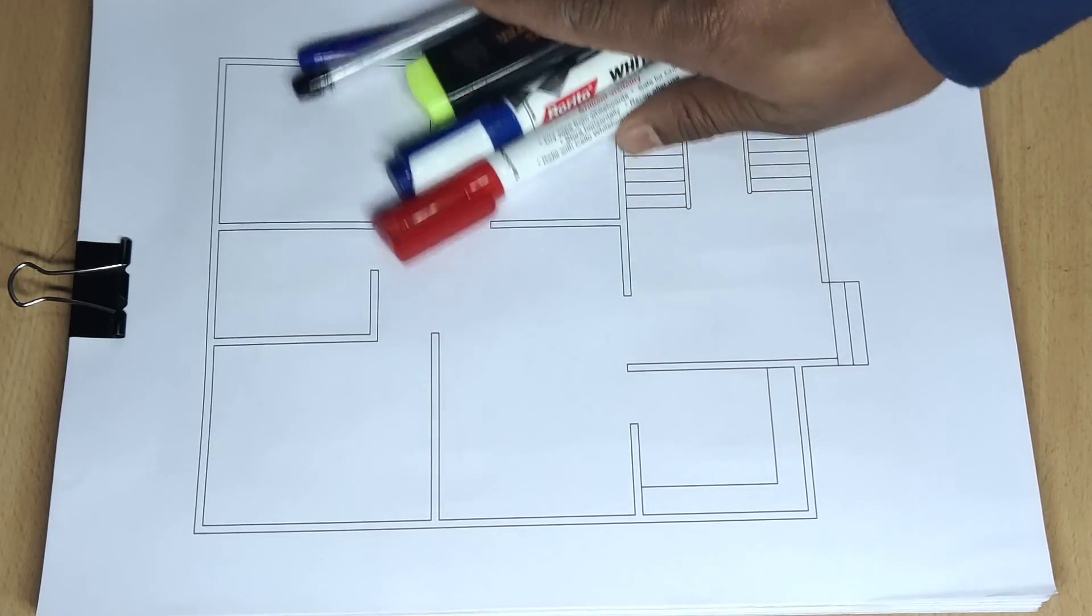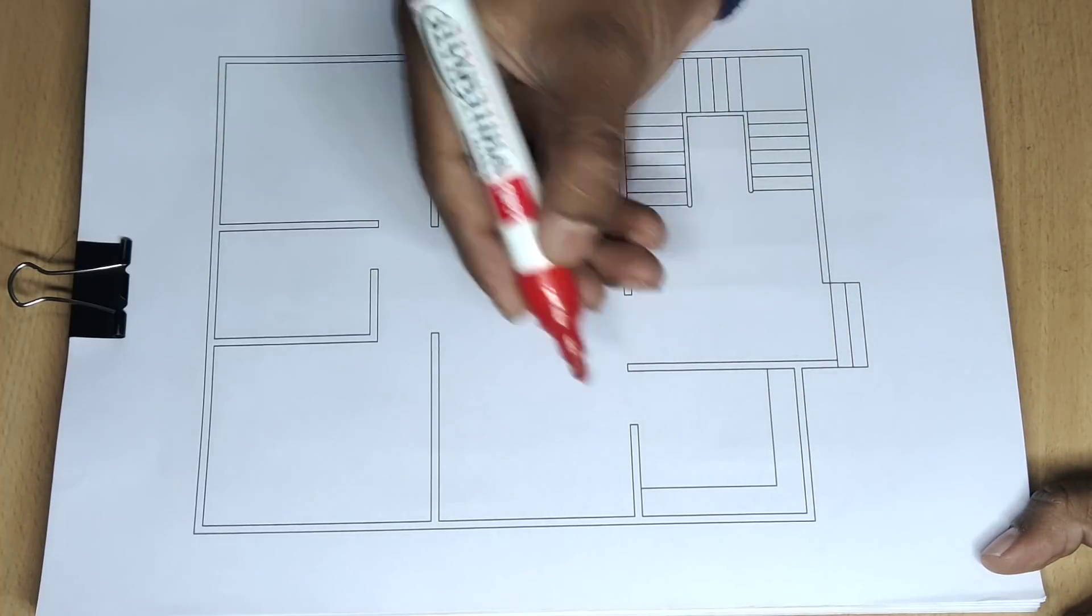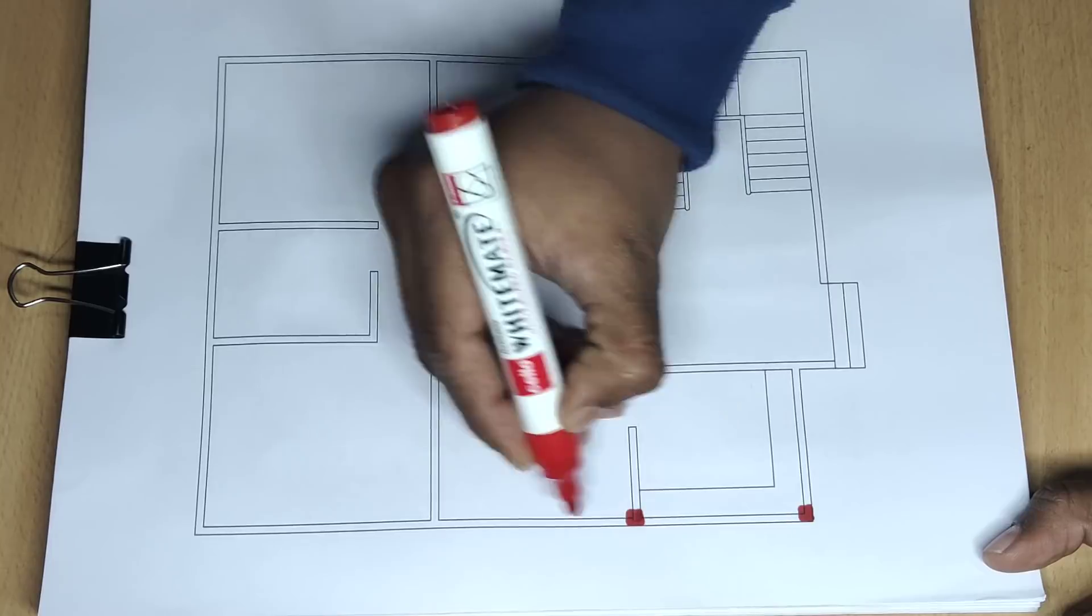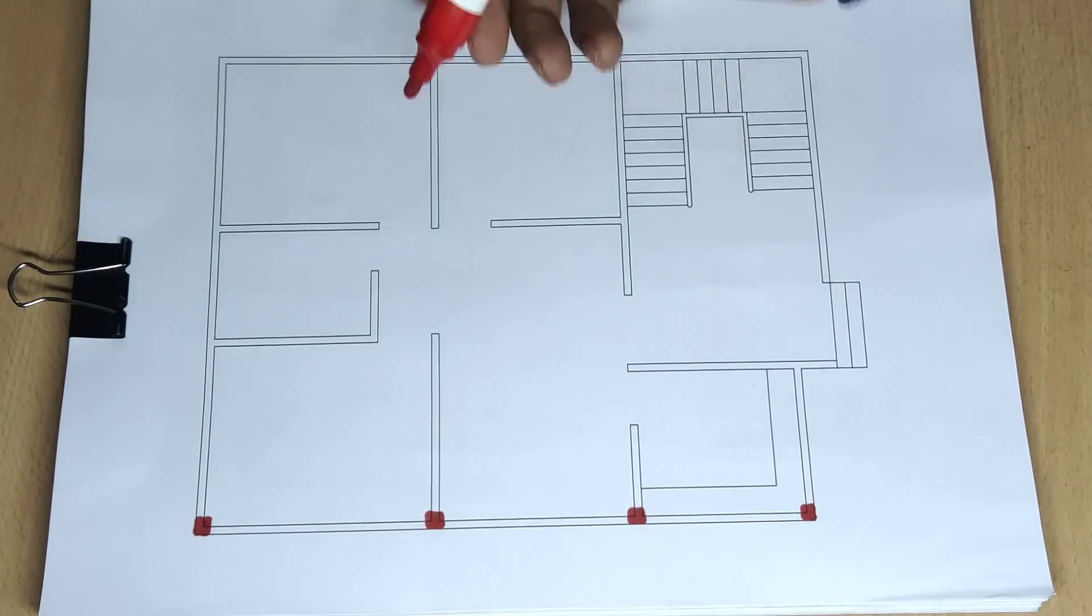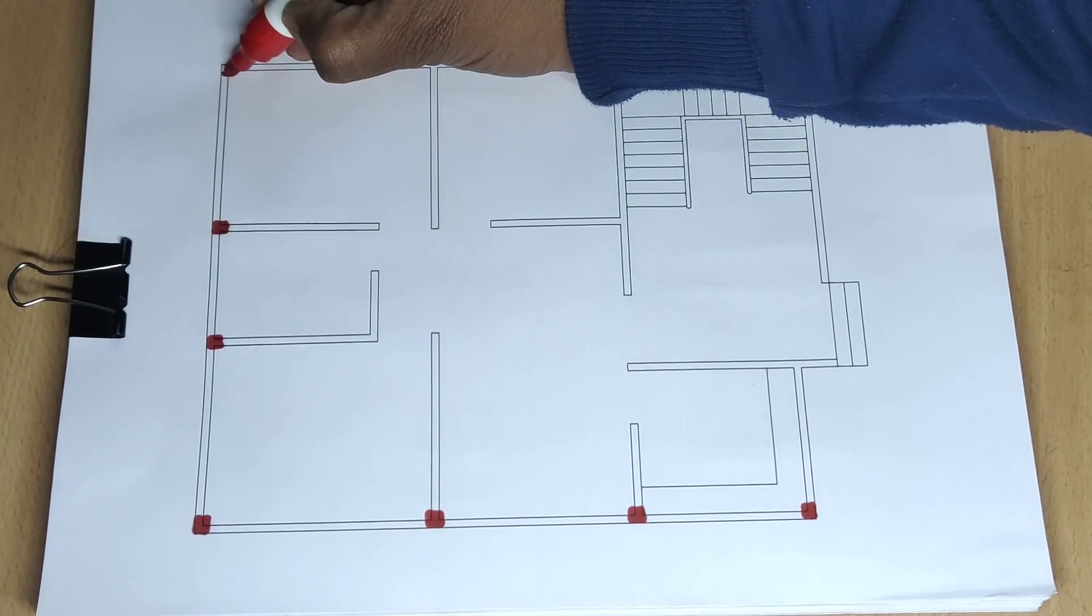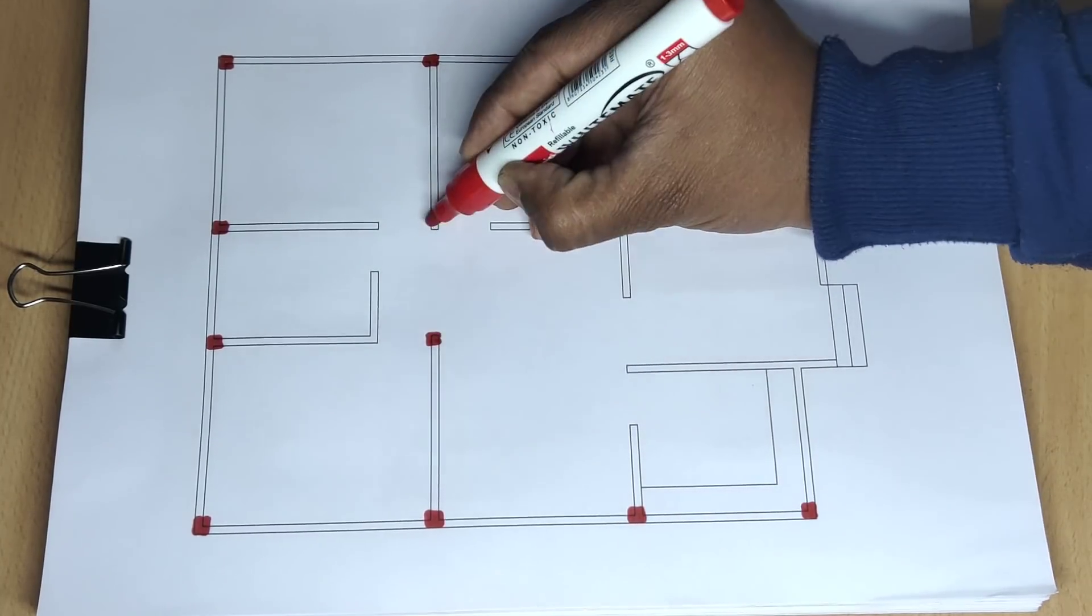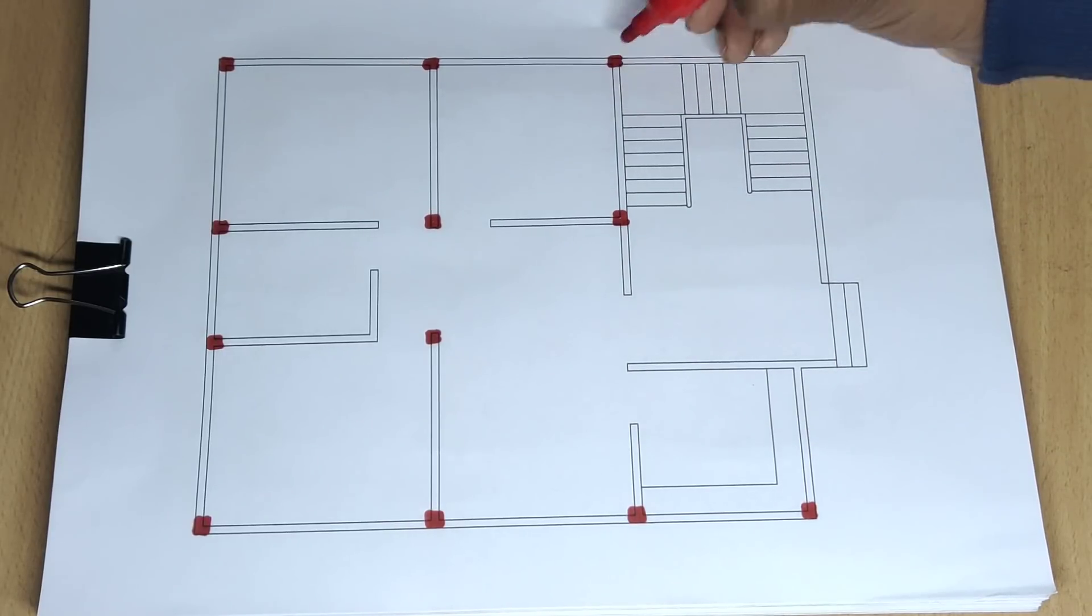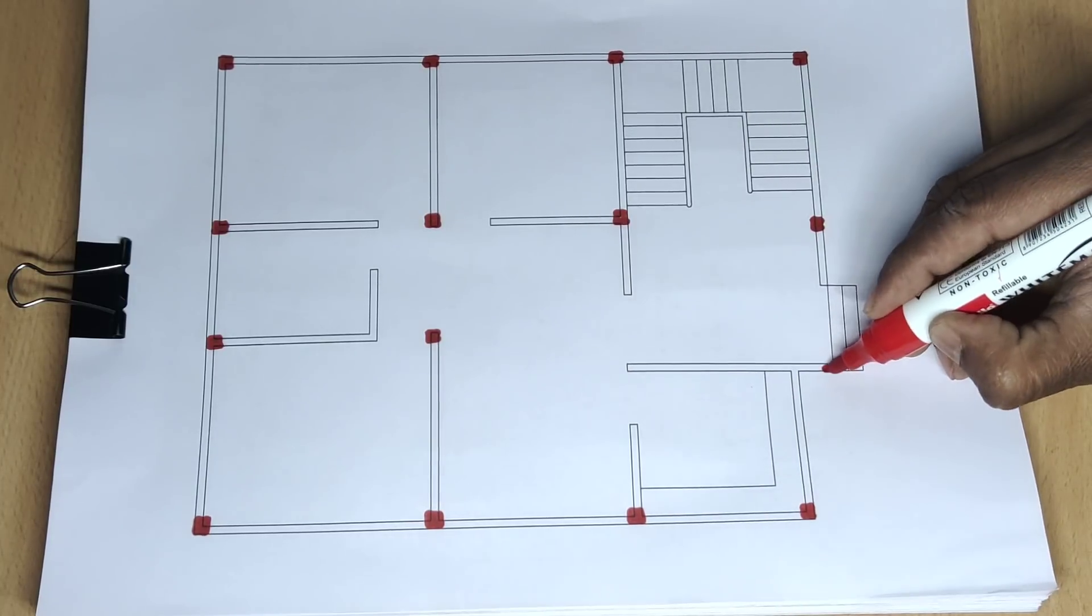Starting this house plan. This is a column - 10 inch by 12 inch wide column.